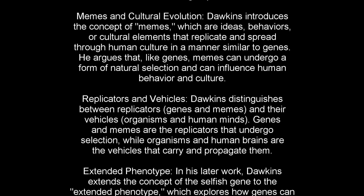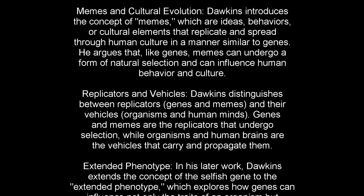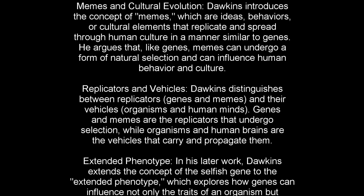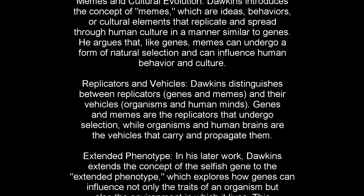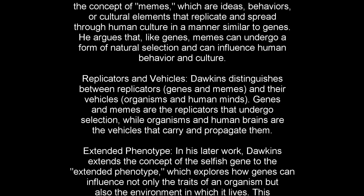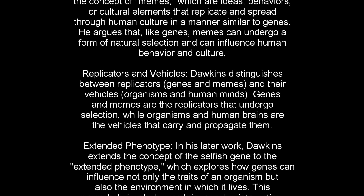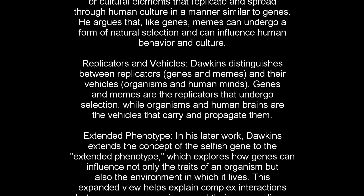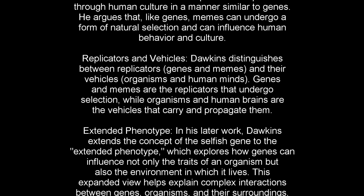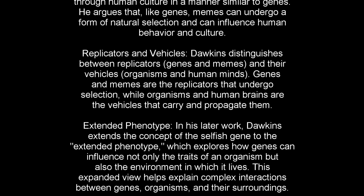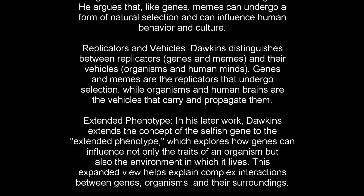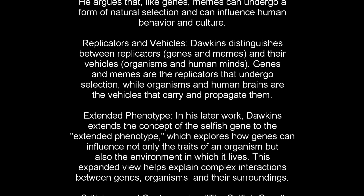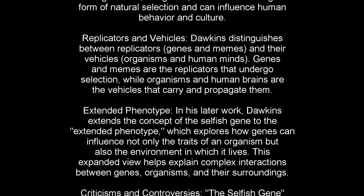Replicators and Vehicles: Dawkins distinguishes between replicators and their vehicles. Genes and memes are the replicators that undergo selection, while organisms and human brains are the vehicles that carry and propagate them.